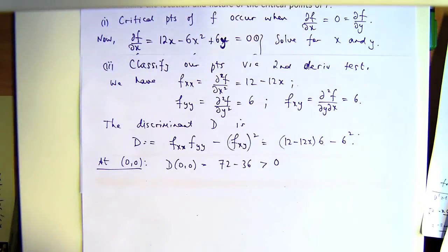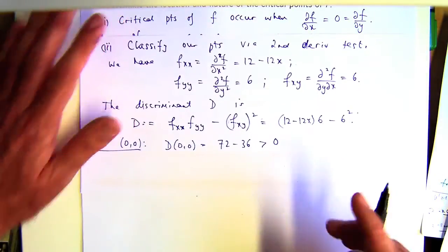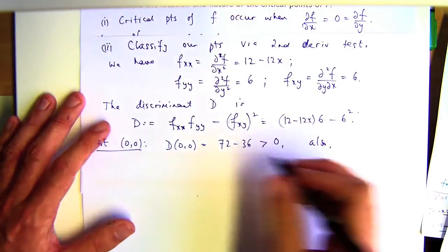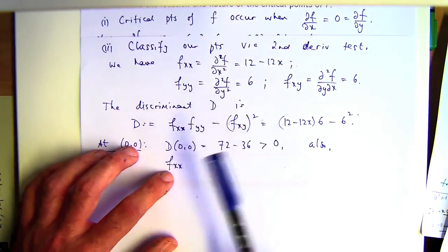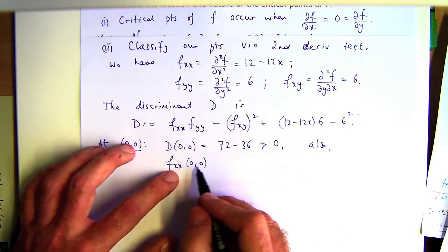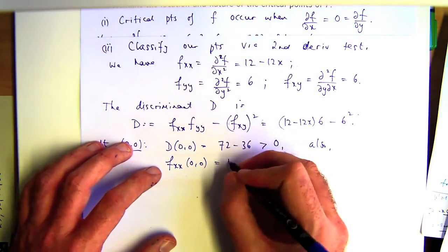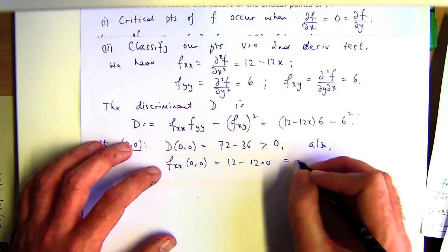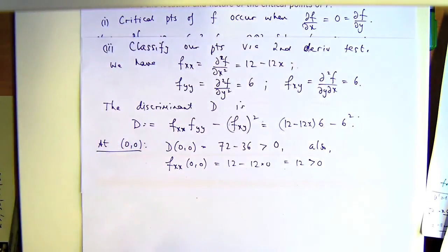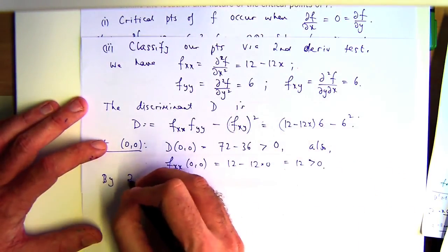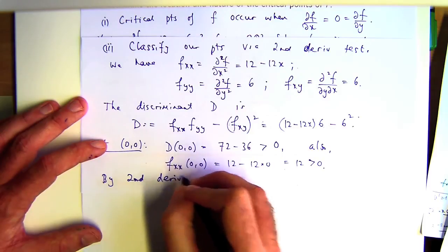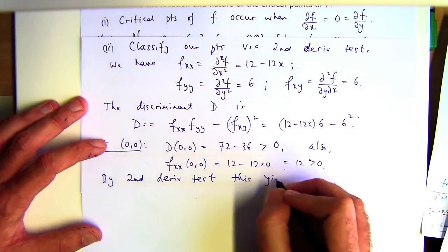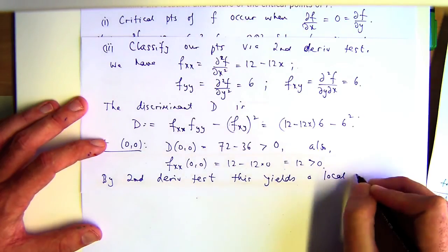Also, we look at the second-order partial with respect to x at (0, 0). So there's my second-order partial. That's 12 minus 12 times 0, that's 12, which is positive. So I have a positive discriminant and a positive second-order partial derivative. If you look up the second-derivative test, what does that mean? Well, it means that the point leads to a local minimum.